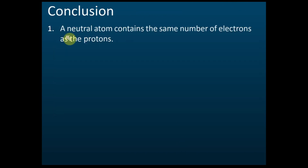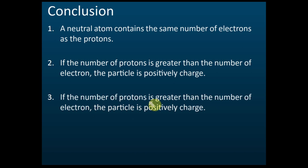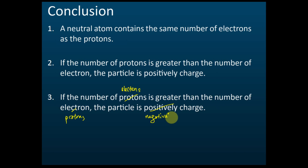So, a neutral atom contains the same number of electrons and protons. If the number of protons is greater than the number of electrons, then the particle is positively charged — more protons than electrons means positive. If the number of electrons is greater than the number of protons, the particle is negatively charged. That's the conclusion.